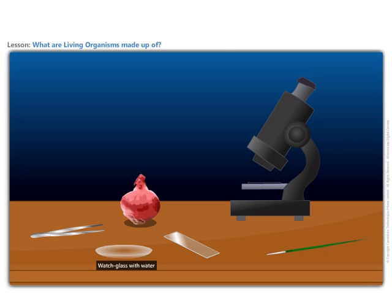Let us do a simple experiment. We will observe a piece of onion skin under the microscope. You will then draw what we see under high magnification in your notebook.